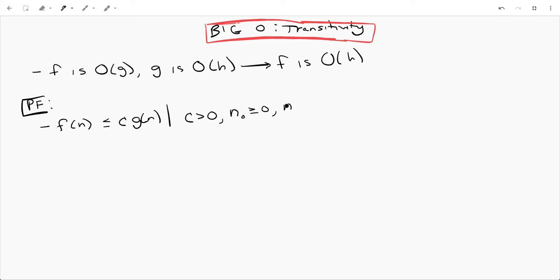And then we have all n, all input sizes are going to be greater than or equal to that minimum input size n naught. And if this is confusing, please check out that video on the definition of big O.